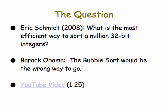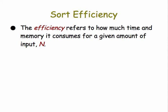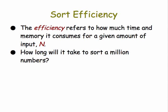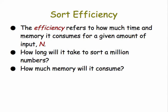Well, he was right, and in this presentation we want to see why he was right. Efficiency, as we know, refers to how much time and memory an algorithm consumes for a given amount of input. In the case of sorting, it would be a question like how long will it take to sort a million numbers, and how much memory will it consume?